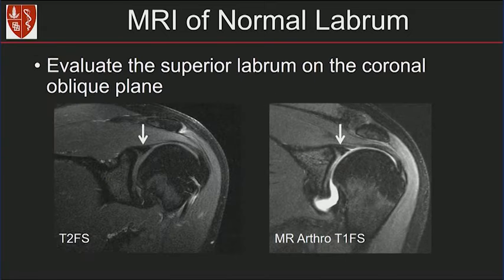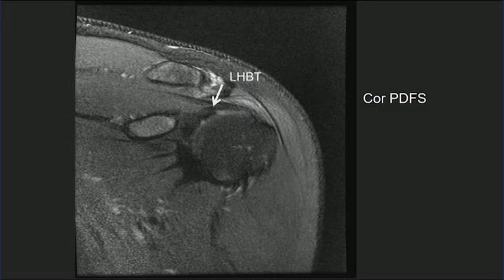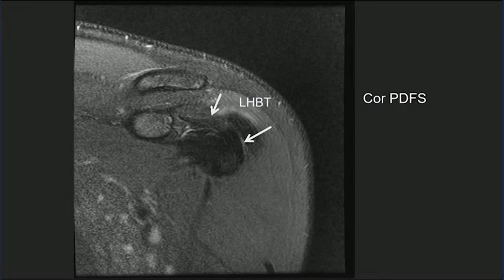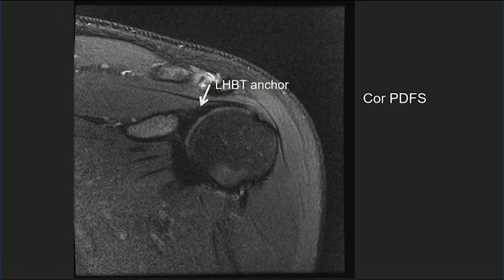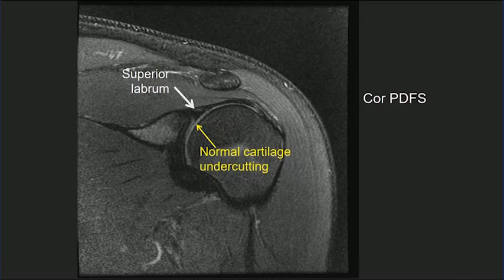We evaluate the superior labrum on the coronal oblique plane. On the left is a T2 fat-suppressed image; on the right is a coronal MR arthrogram image showing a normal superior labrum, dark in signal intensity throughout and triangular in shape. If we scroll through the coronal images from anterior to posterior, here's the long head biceps tendon. As we follow it, you see it going into the anchor, and then the superior labrum is here. Notice the normal cartilage undercutting beneath that superior labrum.